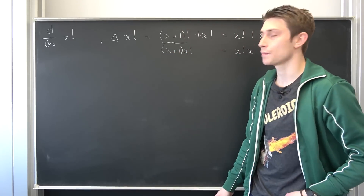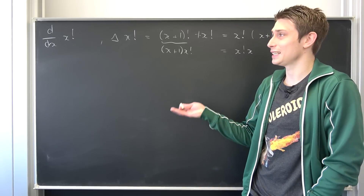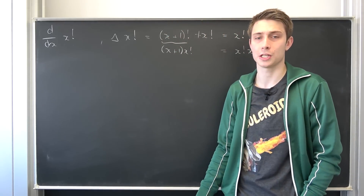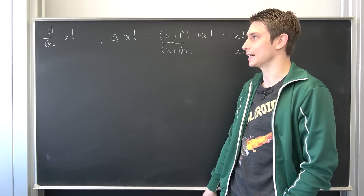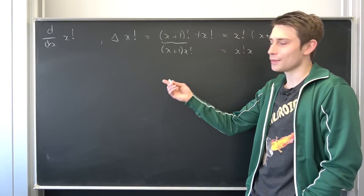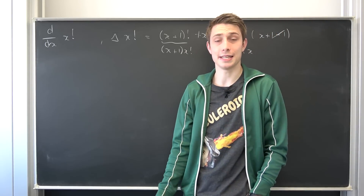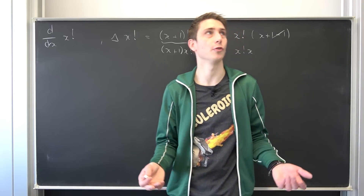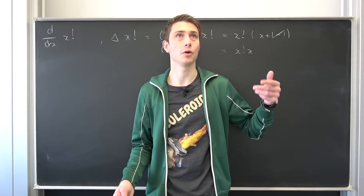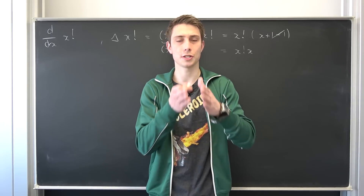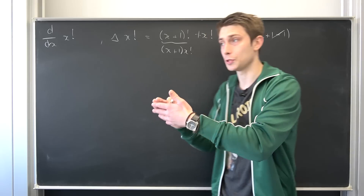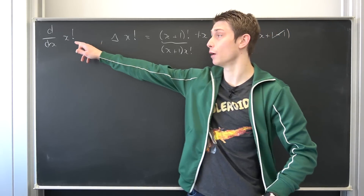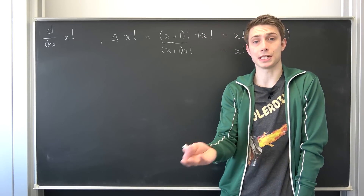But what about real numbers — for example, π factorial or (1/2)! = √π/2? How would you deal with something like this? Here comes the continuation of the factorial to the real numbers, except for negative integers where it diverges and has poles. For the positive reals, we can continuously define x factorial using the gamma function.